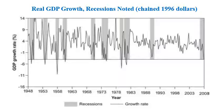In this graph we can see what happened to real GDP growth in times of recession. We see that during recessions there is a decline in GDP growth, and in some cases it reached up to negative 11%.